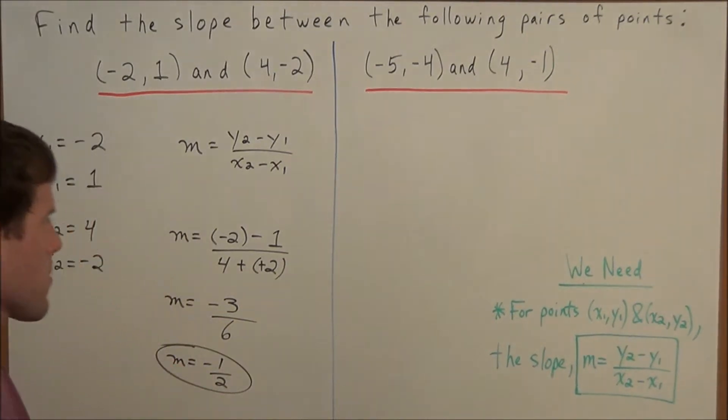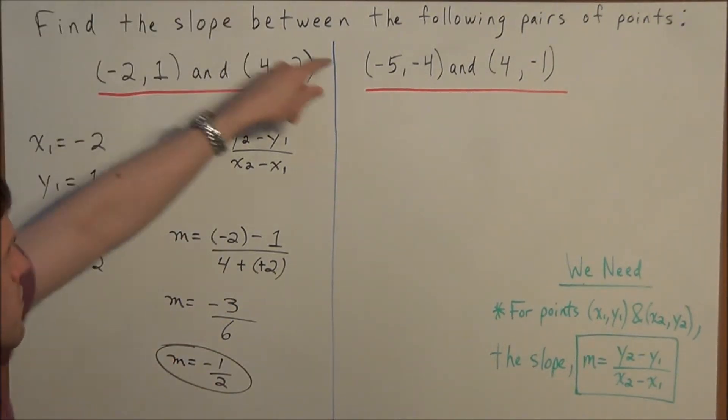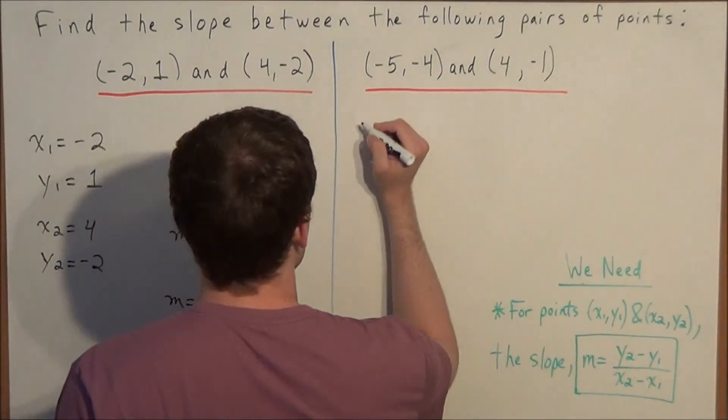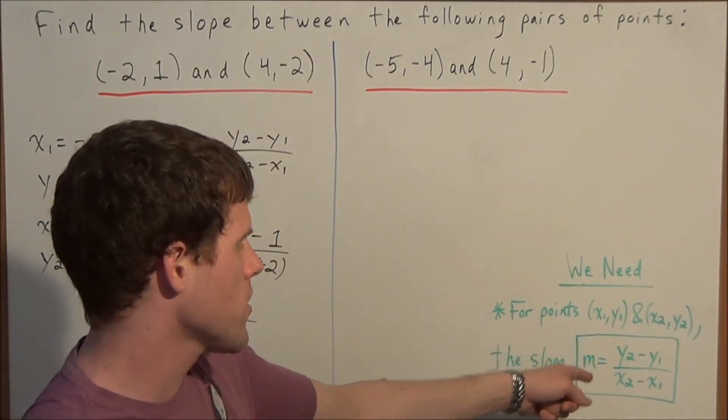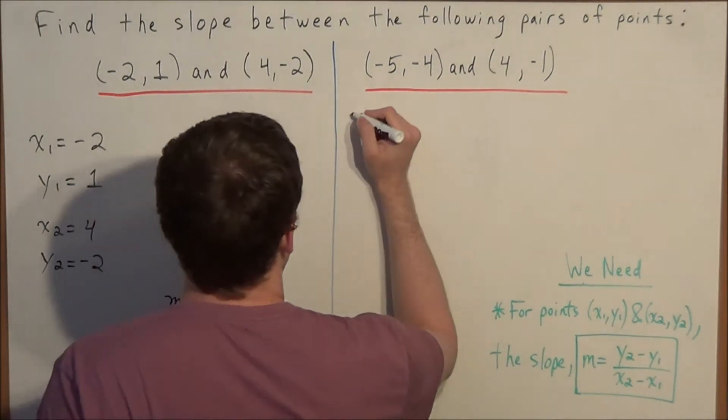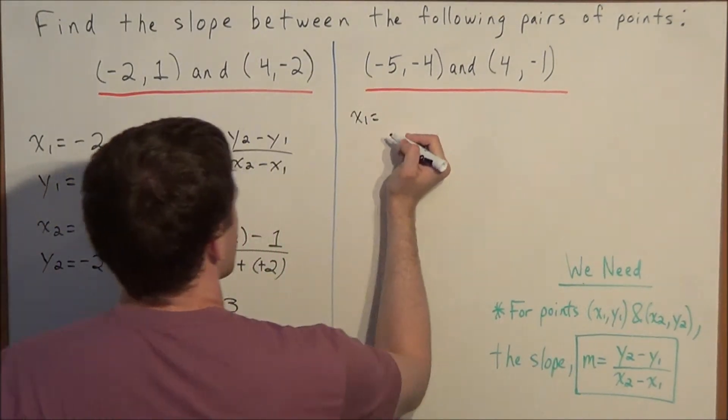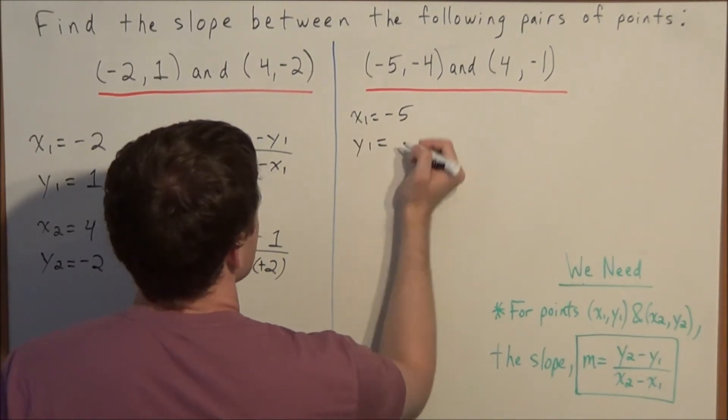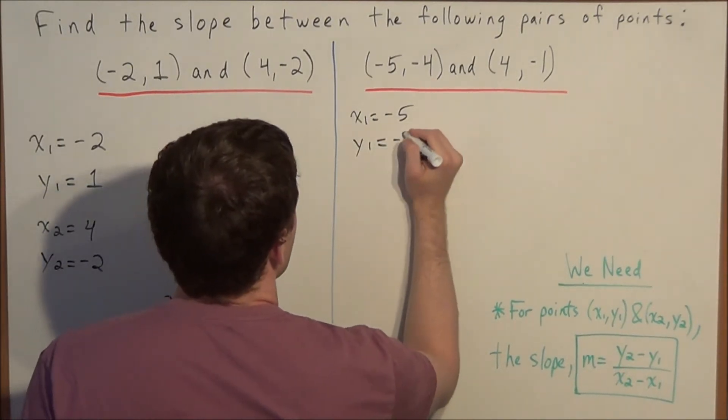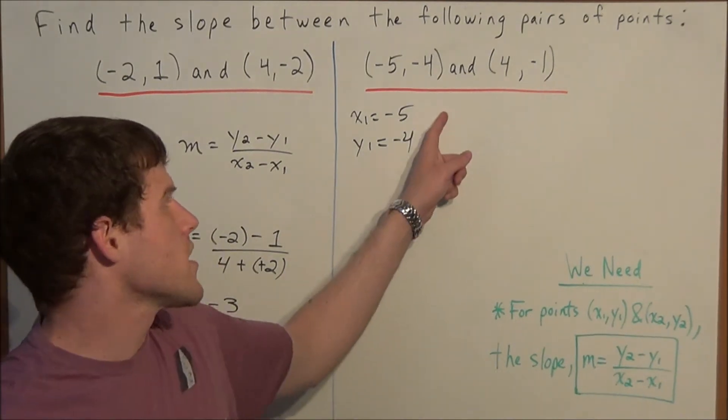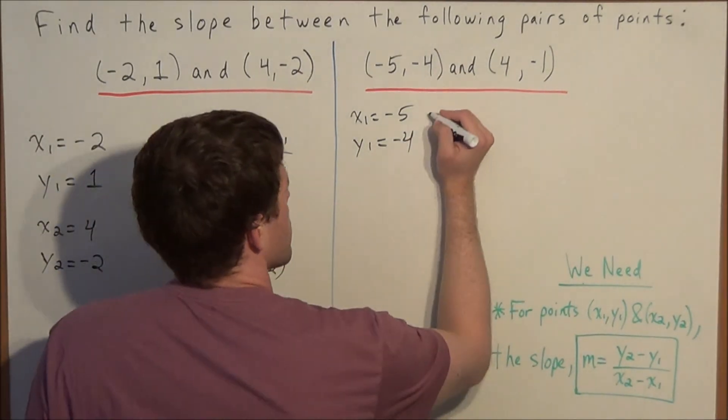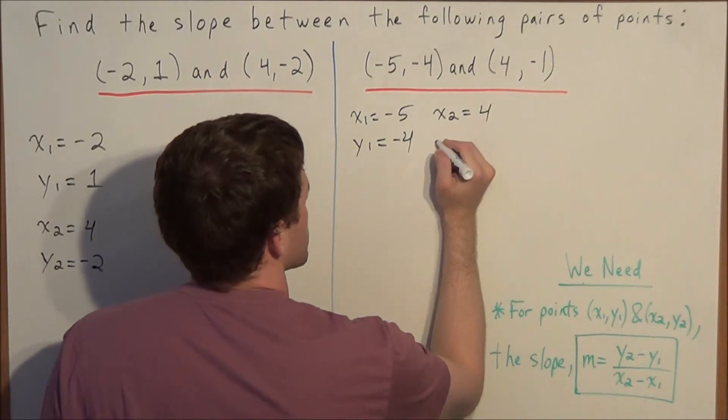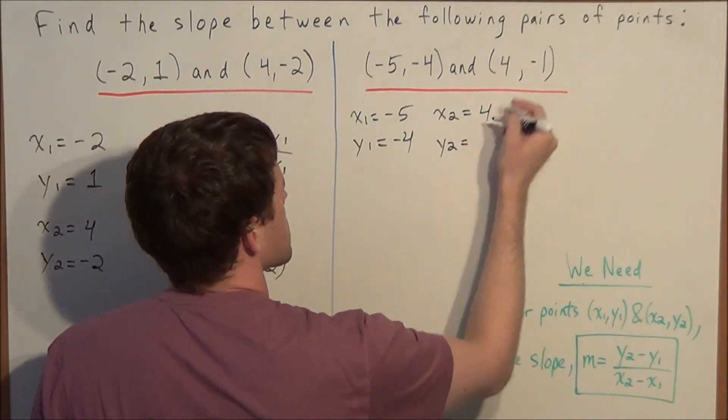So now we're going to use the slope equation again to find the slope between negative five negative four and four negative one. So what we can do is we can designate our x1, y1, and our x2, y2. So let's say our x1 we can set equal to negative five, our y1 we can set equal to negative four, we can set our x2 equal to four, and finally we can set our y2 equal to negative one.